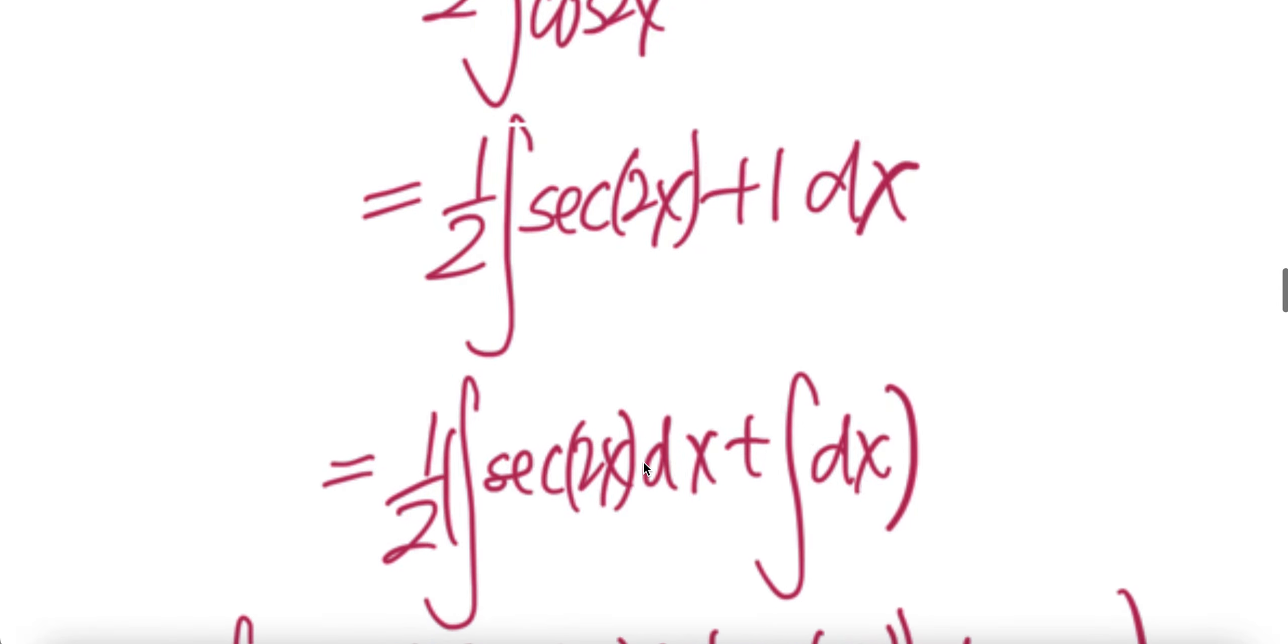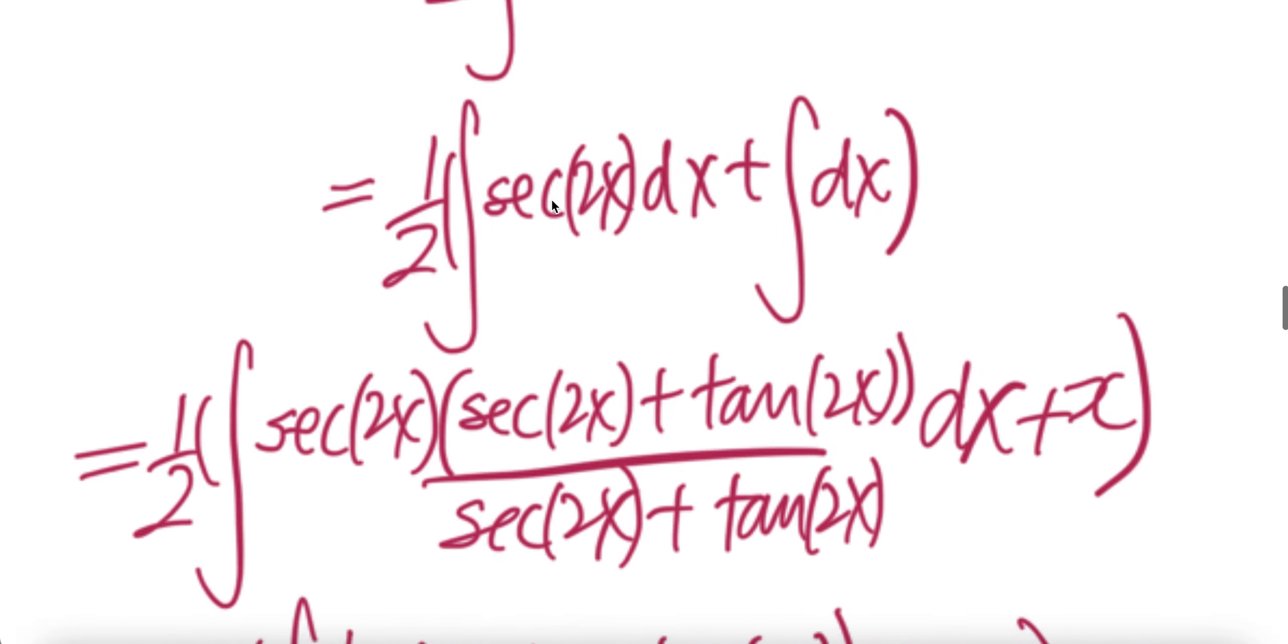And then integral of a sum is the sum of integrals. And then for this integral, this is a standard trick. Multiply top and bottom with sec 2x plus tan 2x. And here, the integral cancels, you get x.